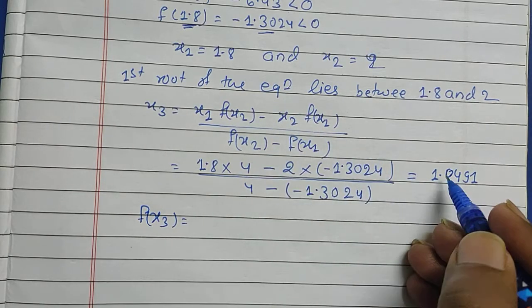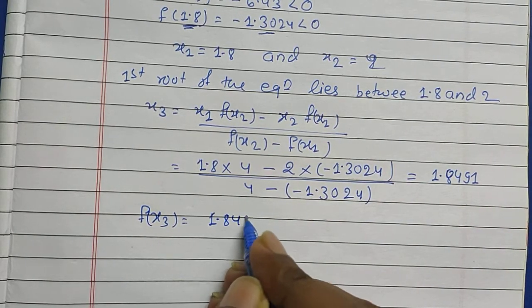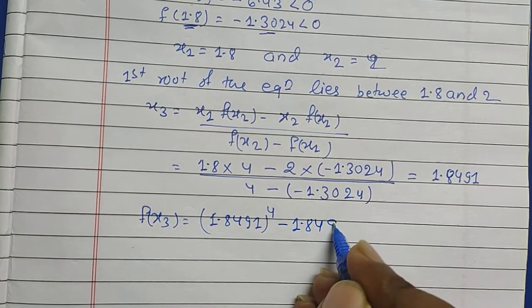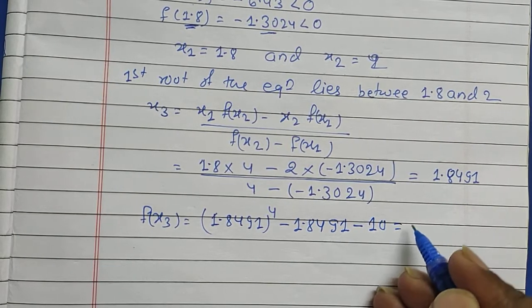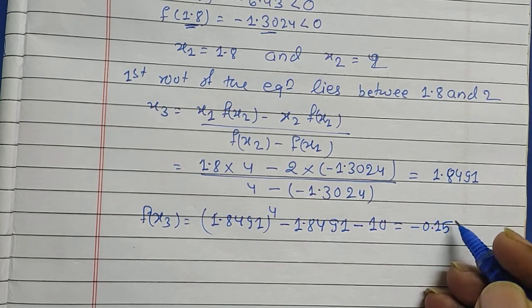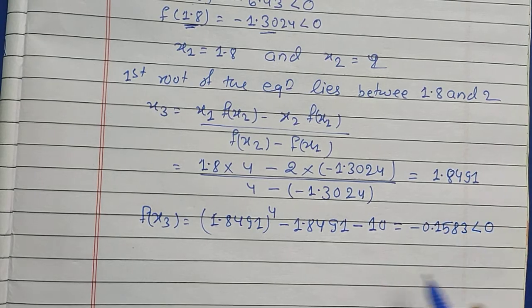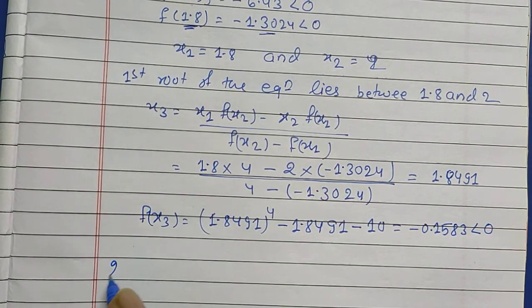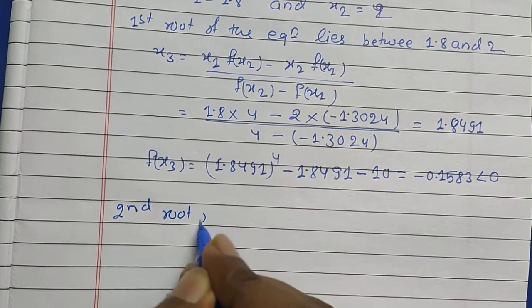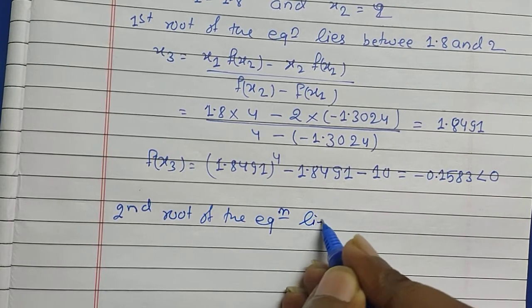Now find f(x3) by substituting x = 1.8491 into the equation: 1.8491 to the power 4 minus 1.8491 minus 10 gives −0.1583, which is less than zero. The root of the equation lies between 1.8491 and 2.